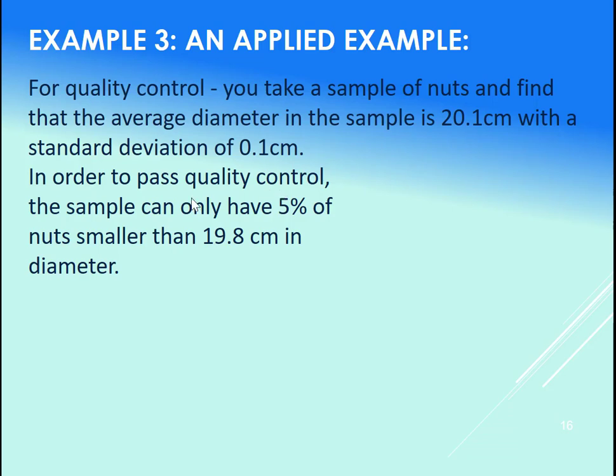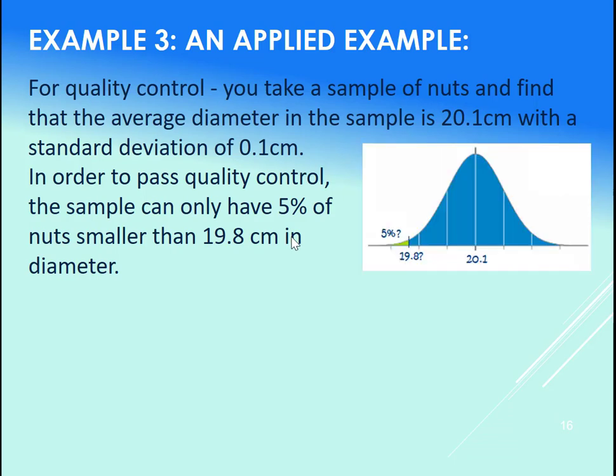In order to pass quality control, the sample can only have 5% of the nuts smaller than 19.8 centimeters in diameter. Note that in this case, it's okay for them to be a little bit bigger, but it's bad for them to be smaller because then they won't fit on the bolt. We're not going to talk about the threading of them, that would also be quite specific. We're just going to talk about the diameter for now and quality control on that.